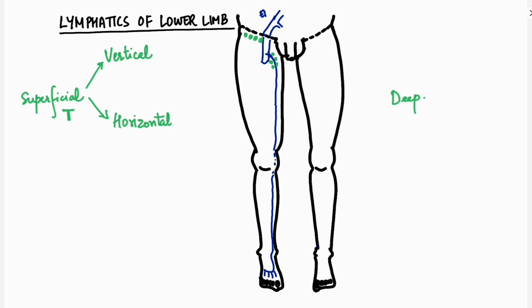The vertical group of lymph nodes receives lymphatics from the medial side of the foot, the leg, and the thigh, and drains into the external iliac nodes. This may be a direct route, or some may actually drain into deeper sets of the inguinal nodes before draining into the external iliac nodes.